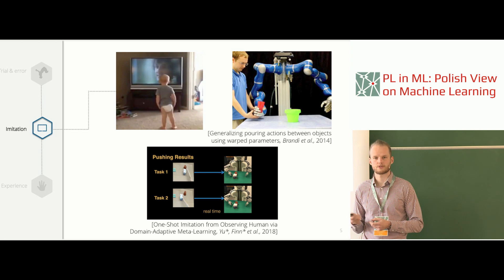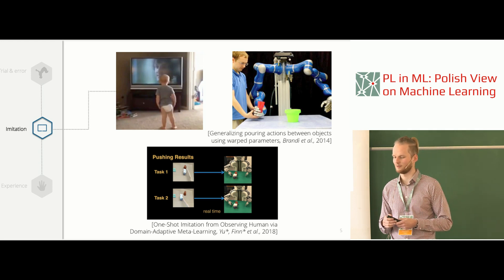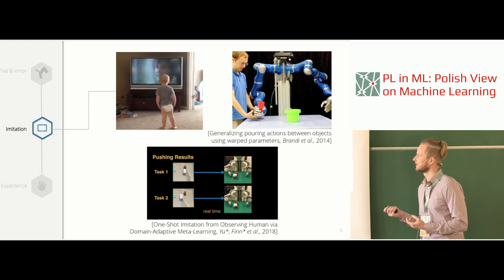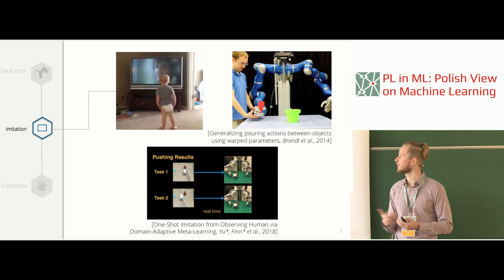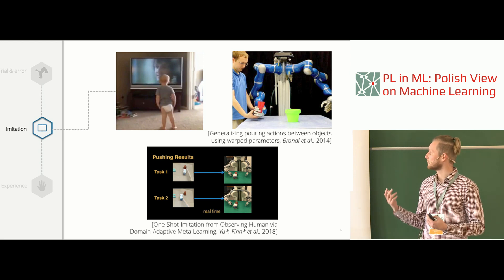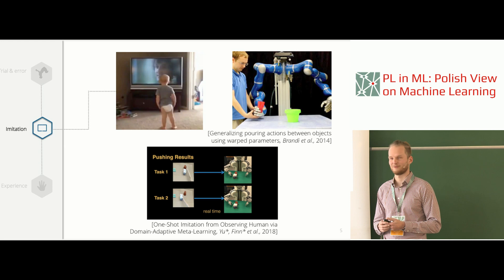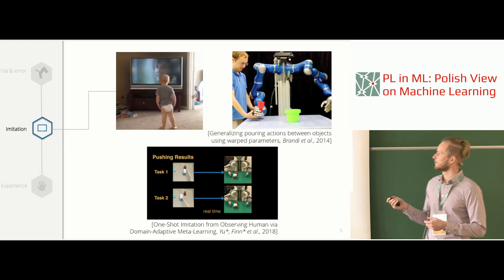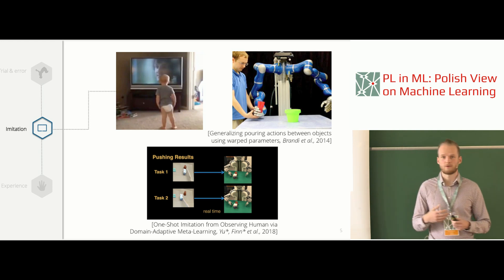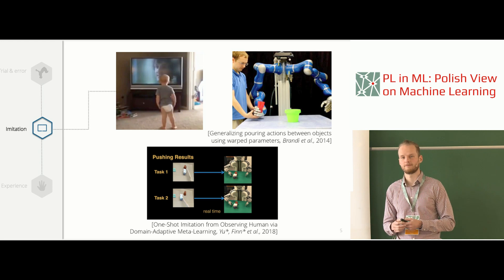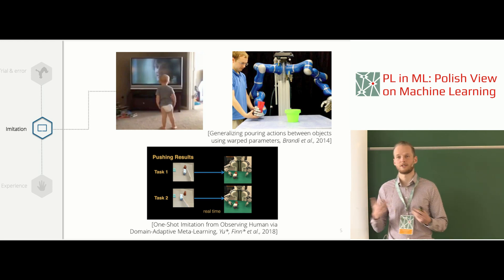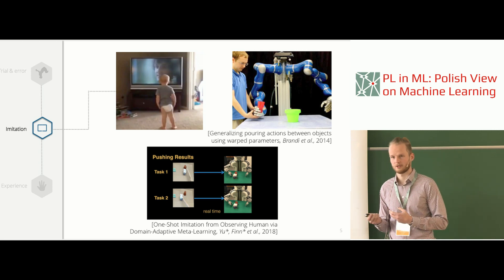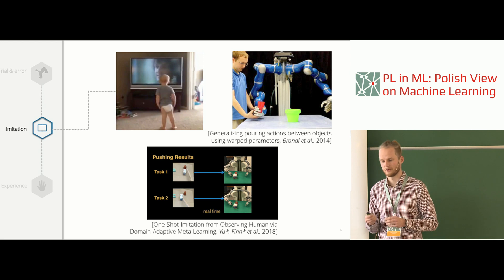Imitation learning is an area where humans are particularly impressive. A baby can watch Rocky Balboa on a 2D screen — an agent with a very different morphology — and find the mapping to its own morphology, imitating every skill more or less perfectly. It can also realize when skills switch and how to imitate each one. Compare this to state of the art in robotics three years ago.